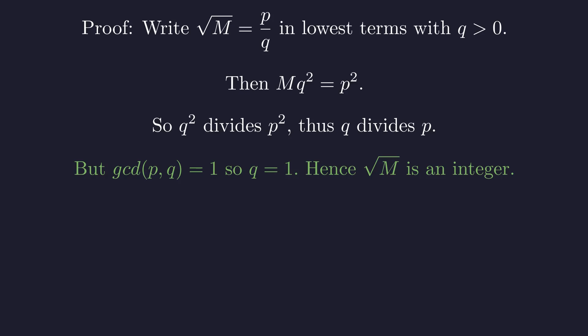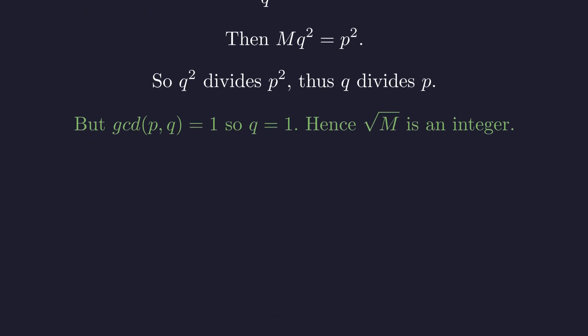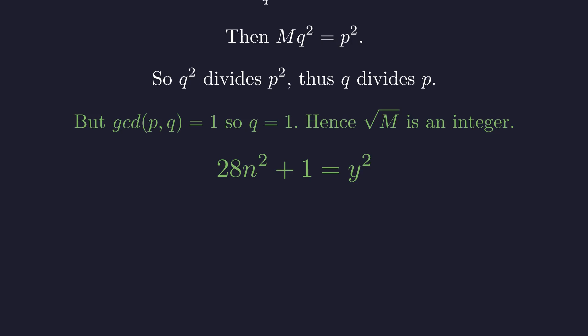Applying our proven lemma, because the square root of 28n² plus 1 is rational, it must be an integer. This implies that the expression inside the square root, 28n² plus 1, must be a perfect square. Let's call it y² for some integer y.